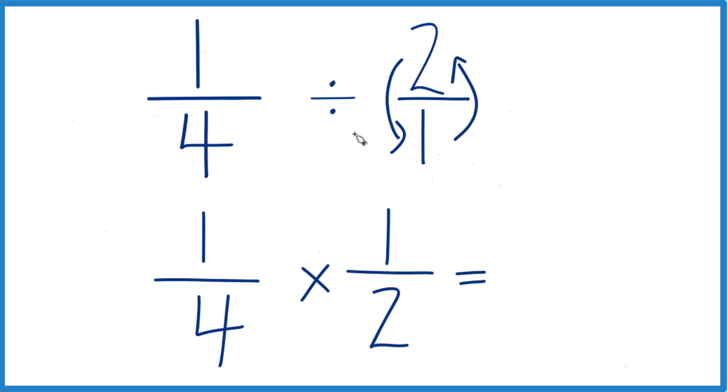Now with fractions, when you multiply, you multiply the numerators. One times one is one. And then the denominators, four times two, that's eight. So one-fourth divided by two, or one-fourth times one-half, that equals one-eighth.